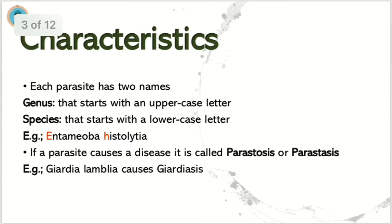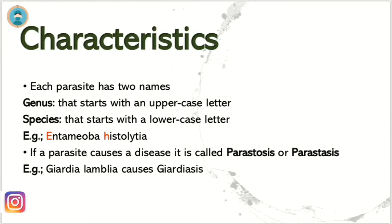What are the characteristics of a parasite? Each parasite has two names. The first one is the genus name, which starts with an uppercase letter. The second one is the species name, which starts with a lowercase letter. For example, Entamoeba histolytica — Entamoeba is the genus name, that is why it starts with a capital E, and histolytica is the species name, that is why it starts with a small h.